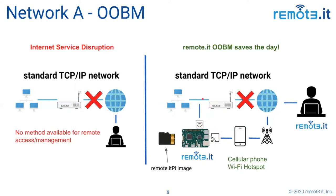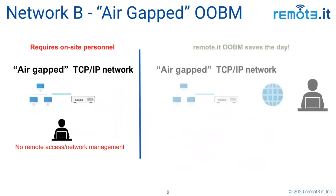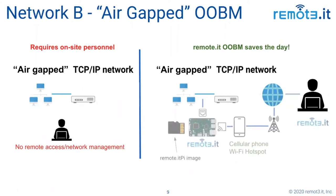If it finds the phone, it will join that and take its internet connection this way, but also be a client on this LAN. Same thing in the air-gapped case — Network B — no internet connection whatsoever to begin with. So the only way you're going to get in is with this kind of configuration.